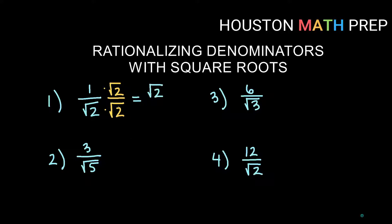Now root two times root two: you could multiply the numbers underneath and get square root of four, which we know equals two. Or think of it this way — the square root of something times the square root of that same thing always equals whatever number is underneath. So root two times root two gives us two. We now have a fraction with no square root in the denominator, and that is our answer.